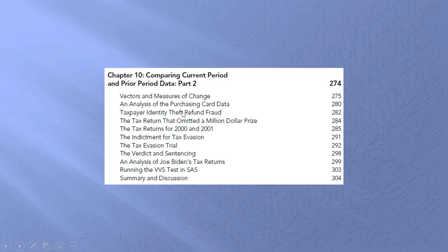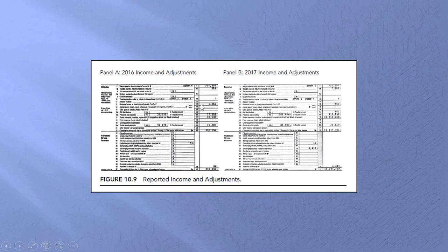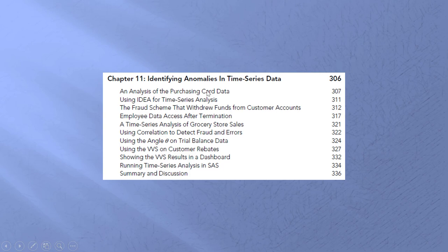This is one of the completely new chapters. We introduce something called the vector variation score, and we talk about how to measure the change in a whole set of transactions. This could be a tax return from one year to the next, a trial balance, or a set of financial statements — how do we measure the change? We come up with some reasonably clever ways of doing this. As an example, we use Joe Biden's tax returns from when he was Vice President to when he was no longer Vice President — his income jumped rather remarkably.